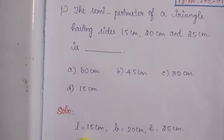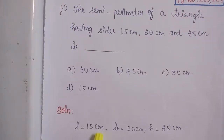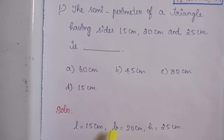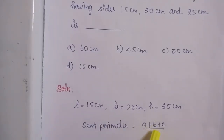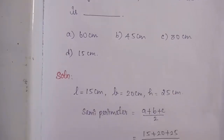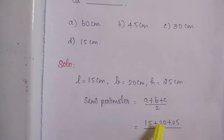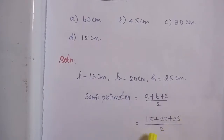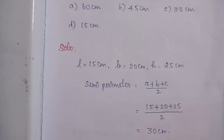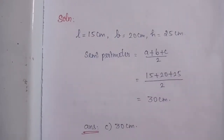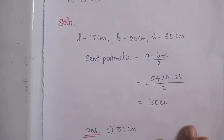Solution: The semi-perimeter of a triangle is A plus B plus C by 2, where A, B, C are the sides of the triangle. So it is equal to 15 plus 20 plus 25 by 2, which is equal to 30 cm. The correct answer is Option C: 30 cm.